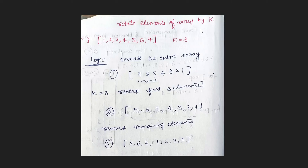The rotation logic uses three steps. Step 1: reverse the entire array. After reversing, you get a new arrangement. Step 2: reverse the first k elements (first 3 elements) — so 5, 6, 7 get reversed into position. Step 3: reverse the remaining n minus k elements — 4, 3, 2, 1 get reversed. This gives the final rotated output: 5, 6, 7, 1, 2, 3, 4.